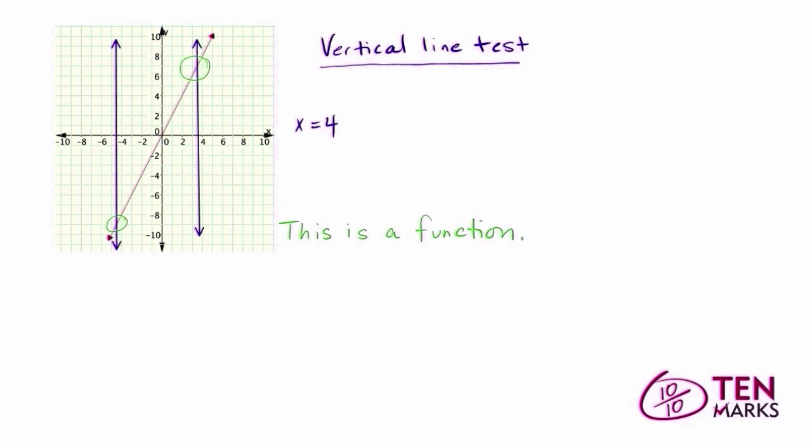The thing to remember is that for a relation to be a function, each input value must pair to a unique output value. You can test that using the vertical line test, and you can also test that by seeing if any x value has two different y values associated with it. Happy solving!